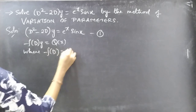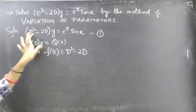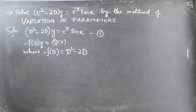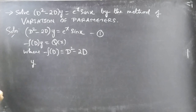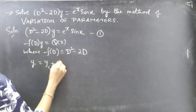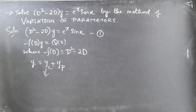Here f(D) = D² - 2D. Notice we don't have any variable coefficients on the left-hand side. The general solution is y = yc + yp. We'll find yc using the auxiliary equation and later find yp using variation of parameters.